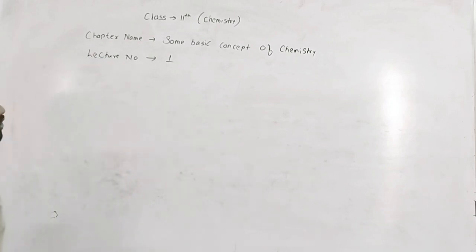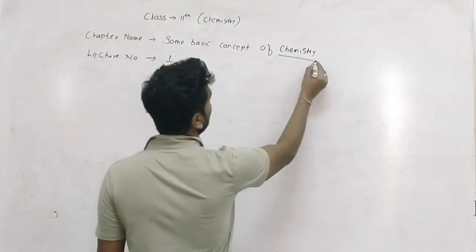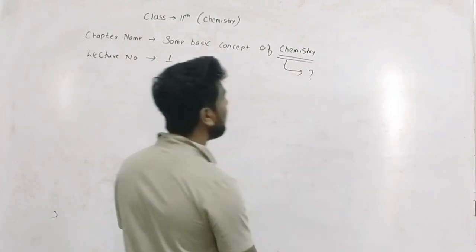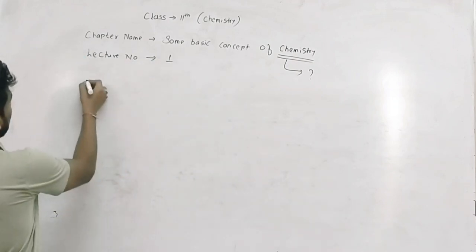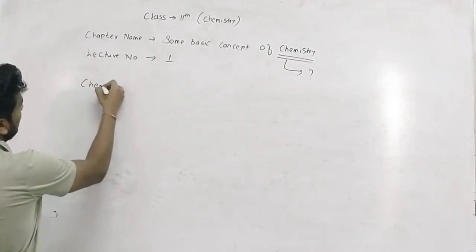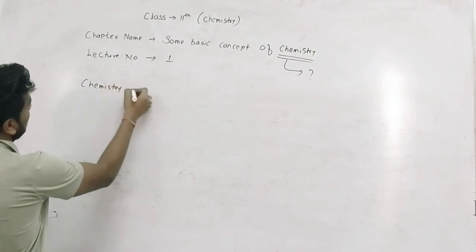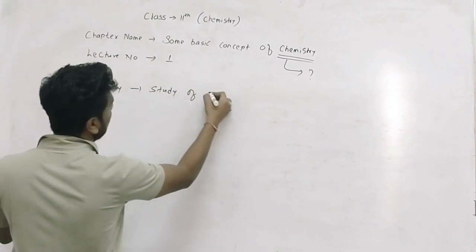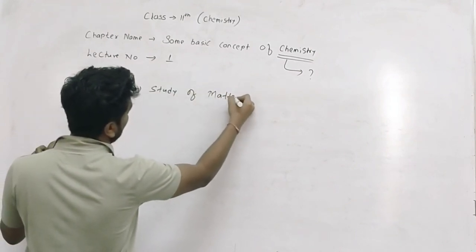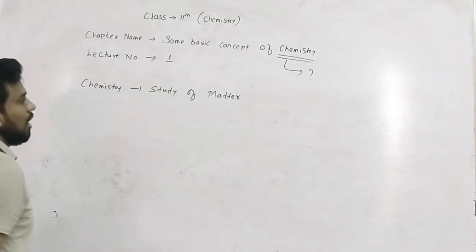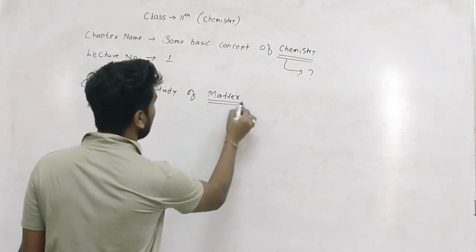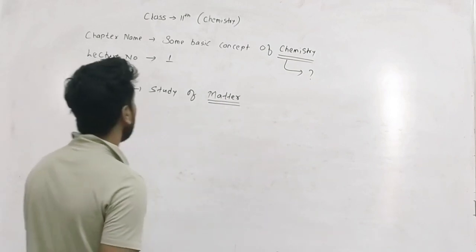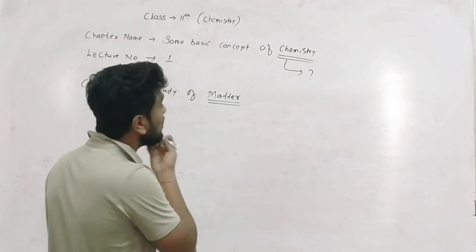Now we start the chapter on Chemistry. What do we mean by Chemistry? Chemistry means this is the study of matter. We relate metal to chemistry. The microscopic level is like studying matter at the microscopic level.